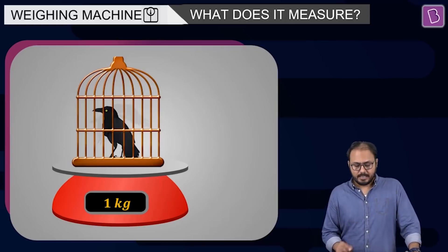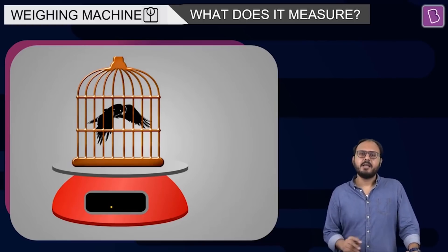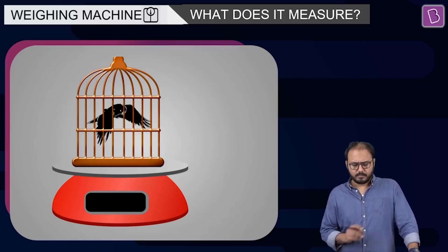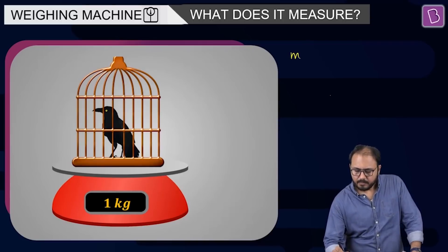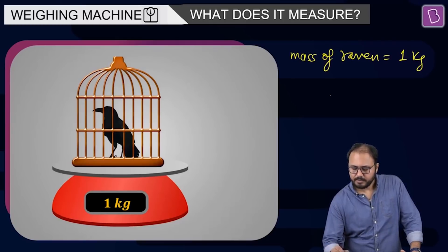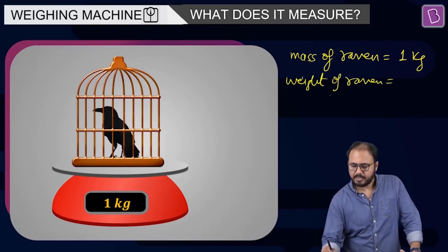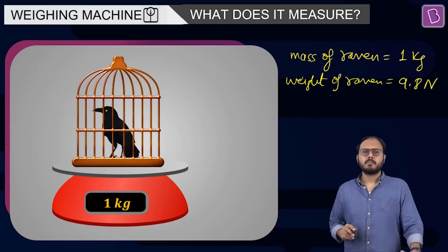In other words, 1kg is the reading of the raven. Raven's mass. Now, this raven starts fluttering its wings within the cage. What is the reading? The reading is zero. Hold on. The raven is sitting on the bed of the birdcage, the reading is 1kg. So you say the weight, the weight, what is the mass of the raven? Mass of the raven is 1kg. Weight of the raven is actually 9.8 N. Agreed?